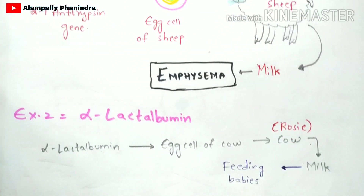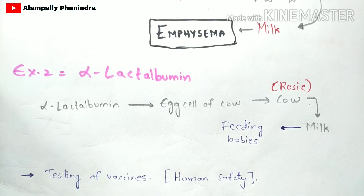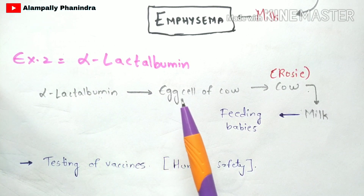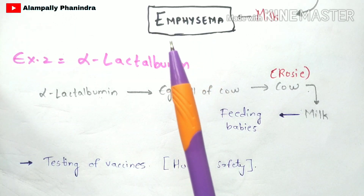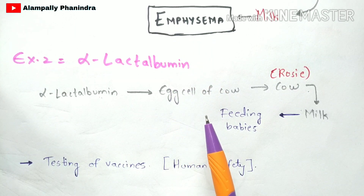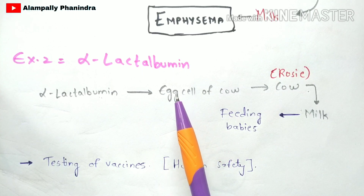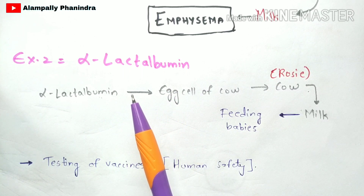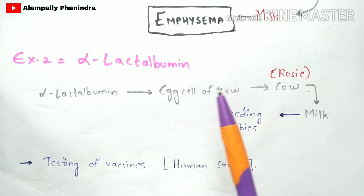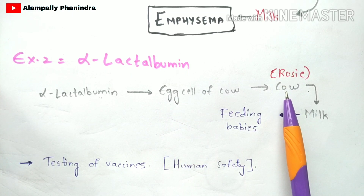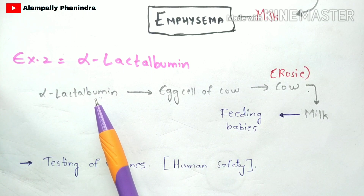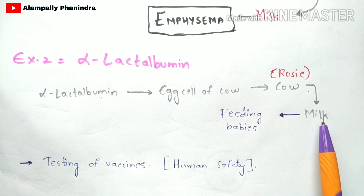In example two, the gene we are going to use is alpha lactalbumin. This alpha lactalbumin gene is introduced into the egg cell of a cow using the microinjection technique. The egg cell is then implanted into the cow — scientists named this cow Rosie. The alpha lactalbumin gene undergoes transcription and translation to form proteins that are present in the milk produced by Rosie.